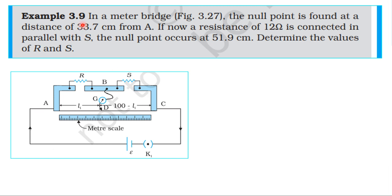From NCERT, testable topic: current electricity, Example 3.9. In a meter bridge, the null point is found at a distance of 33.7 cm from A. If now a resistance of 12 ohm is connected in parallel with S, the null point occurs at 51.9 cm.